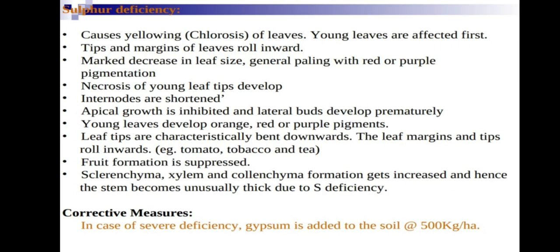Fruit formation is suppressed under sulfur deficiency — this is an important symptom. Sclerenchyma and xylem colon gamma formation increases, causing the stem to become unusually thick. In cases of severe deficiency, gypsum is added to the soil at 500 kg per hectare (one hectare equals 2.5 acres).